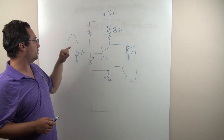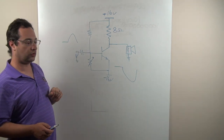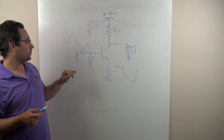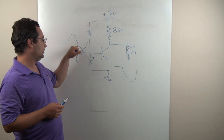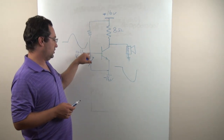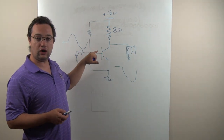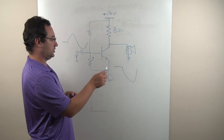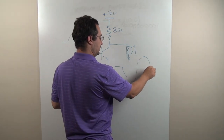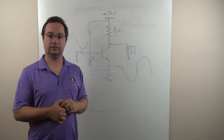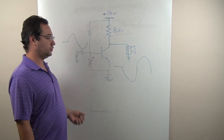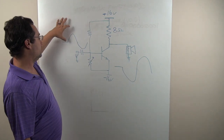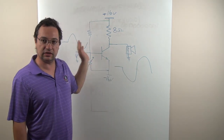And so the waveform that represents the output, as compared to the input, will look something like this — and I've tried to draw it larger than the input. Now we move on to the other portion of the waveform, which would be a negative-going sine wave. The opposite happens in the negative-going portion of the sine wave — the negative portion will cause the transistor to turn off more, which makes the resistance larger, which then takes this point and drags it further up to the positive 16. And so what you get is the positive-going portion of the output waveform.